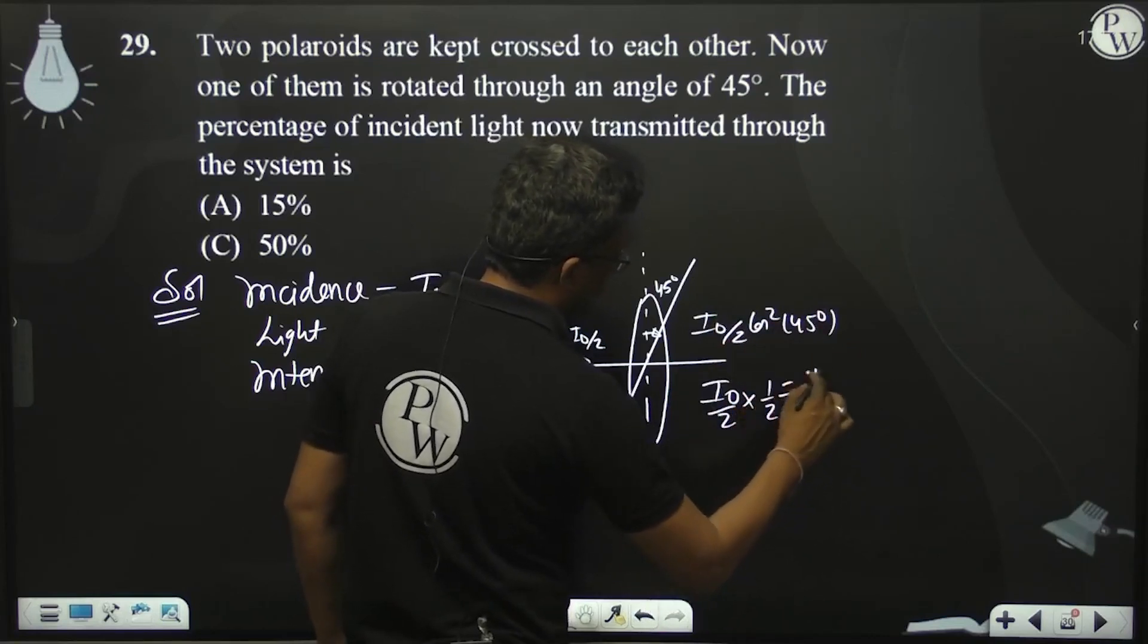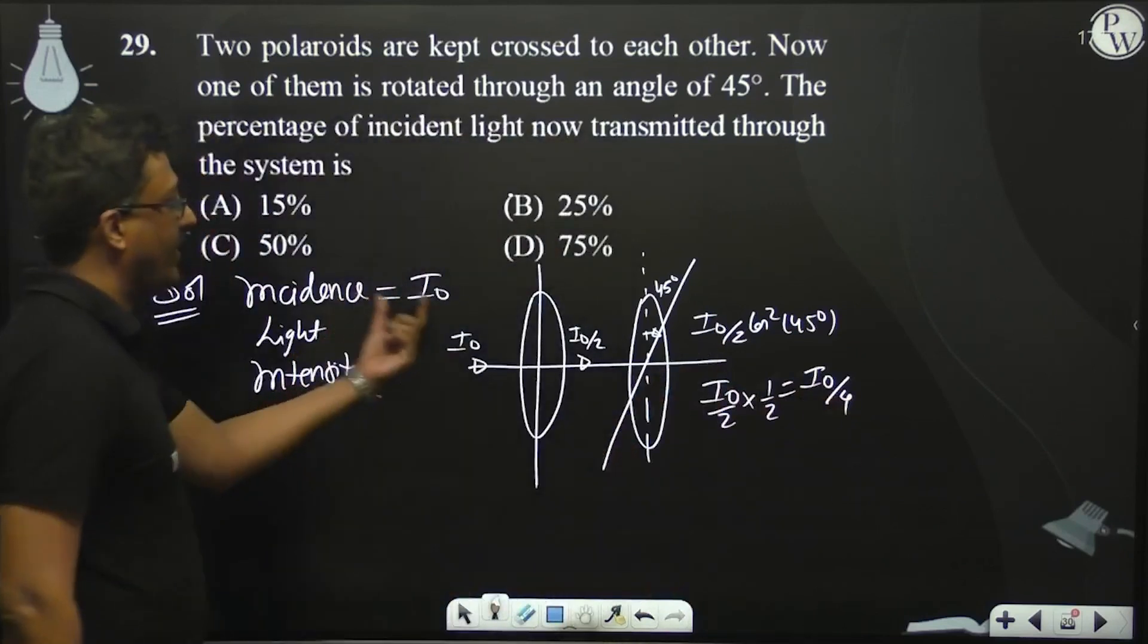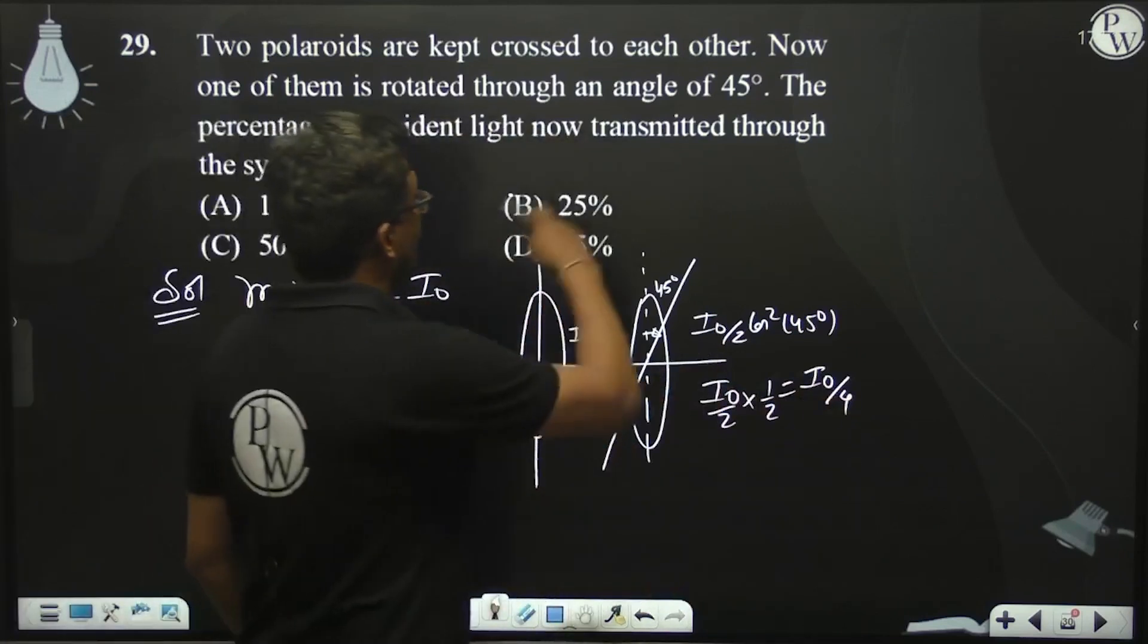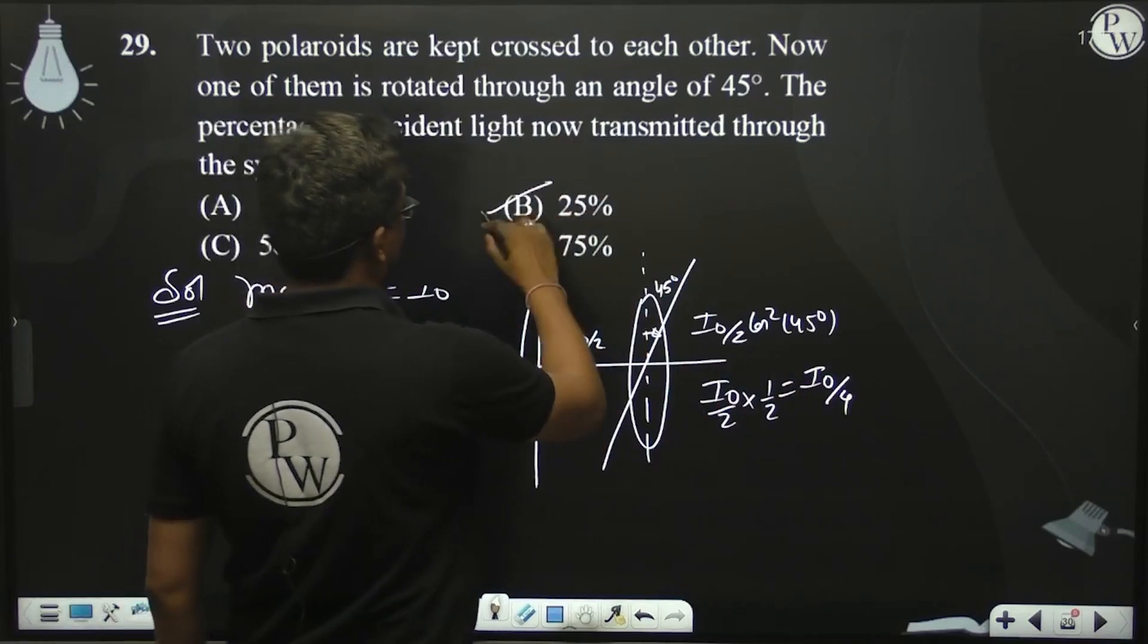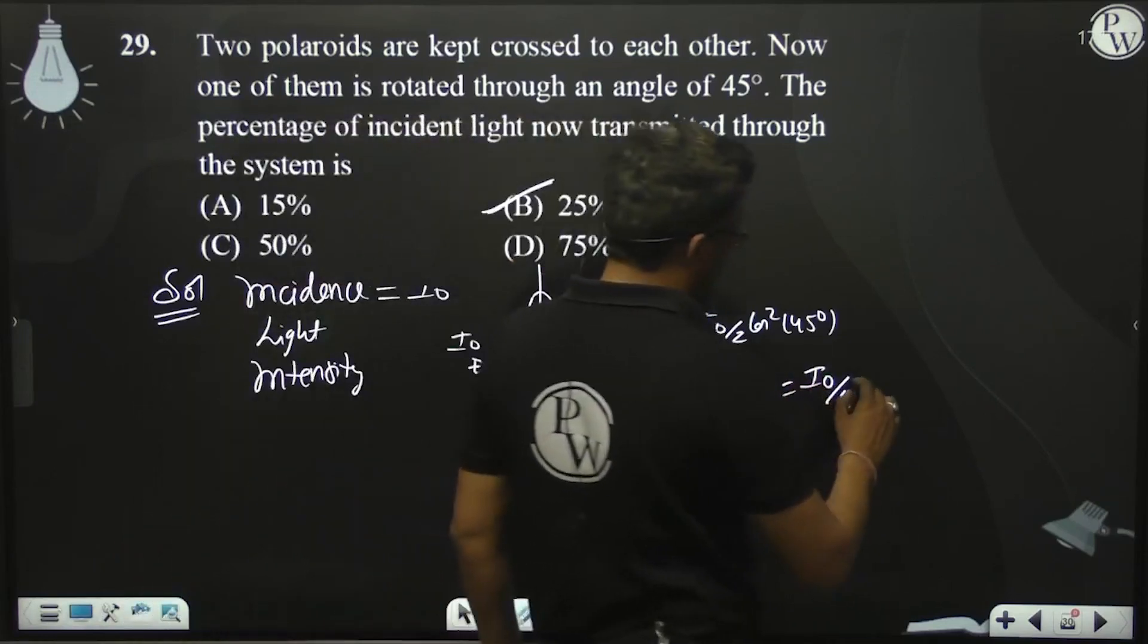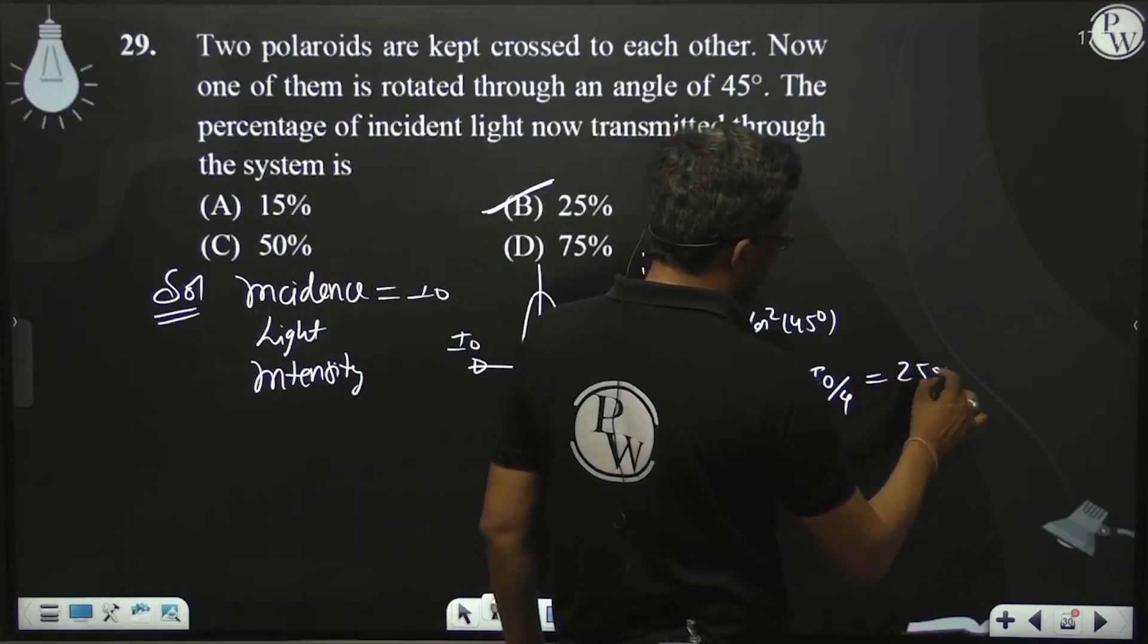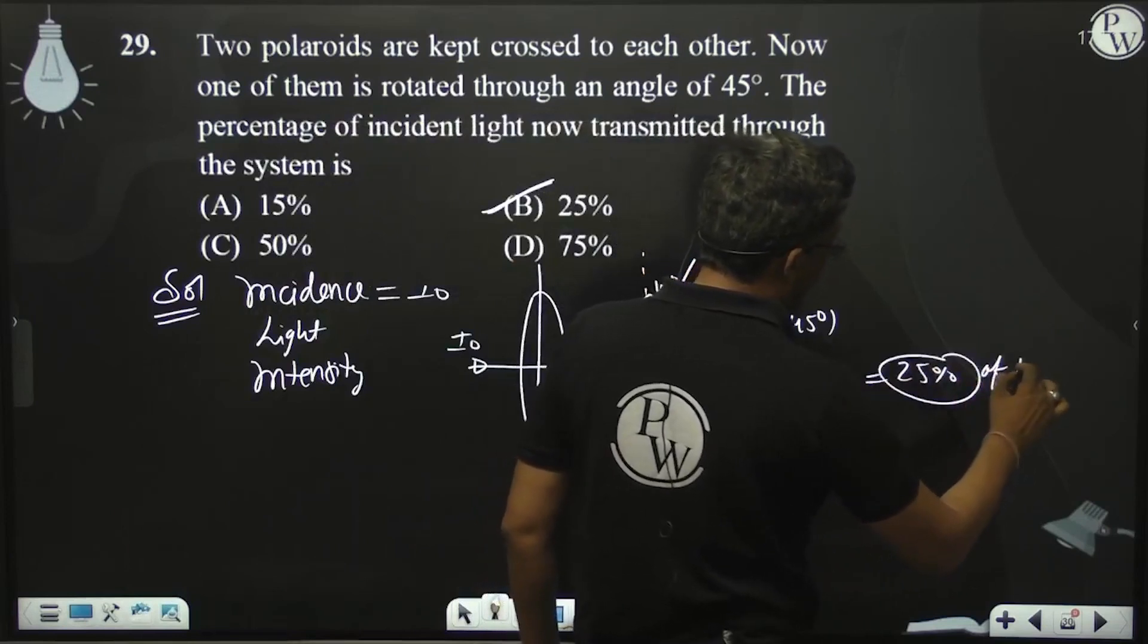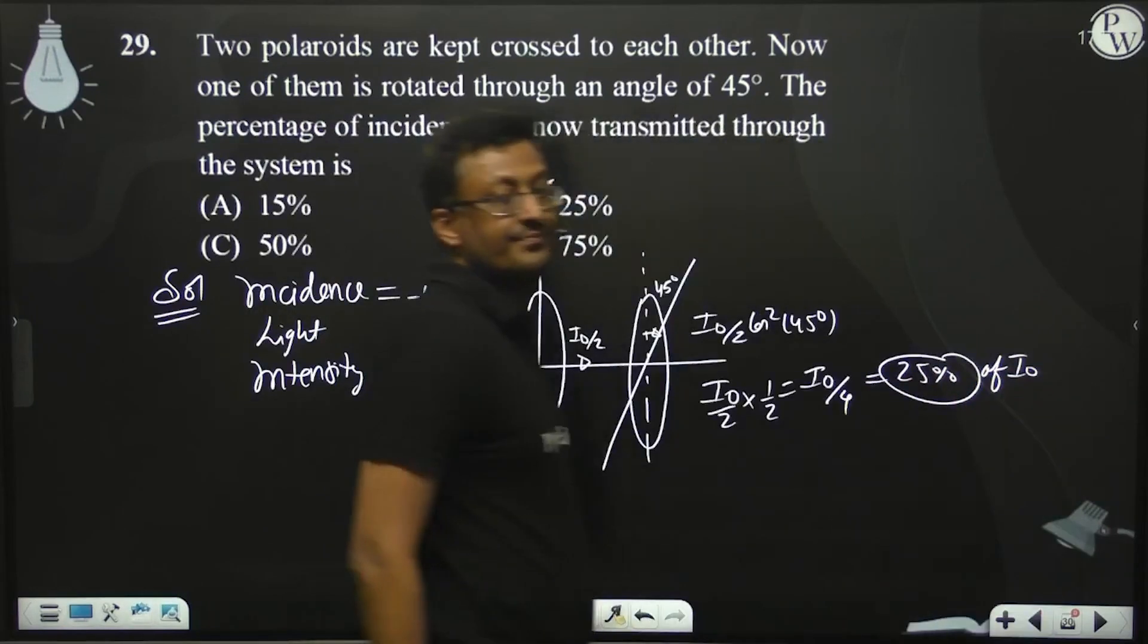So this is I naught by 4. If the intensity is I naught by one fourth, then the transmitted part will be 25 percent of I naught.